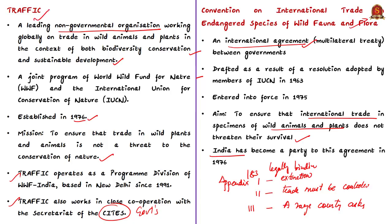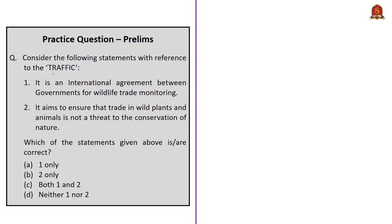The question asks us to consider statements with reference to Traffic. Statement 1 — it is an international agreement between governments for wildlife trade monitoring — is incorrect, since Traffic is not an intergovernmental agreement; it is an NGO. Statement 2 — it aims to ensure that trade in wild plants and animals is not a threat to conservation of nature — is correct, as this is Traffic's objective. The correct answer is option B, 2 only.